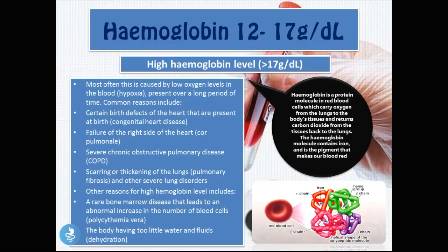A higher than normal hemoglobin level means greater than 17 grams per deciliter, most often caused by chronically low blood oxygen levels known as hypoxia. Other common causes include congenital heart disease, failure of the right side of the heart or cor pulmonale, severe chronic obstructive pulmonary disease, pulmonary fibrosis or other severe lung disorders, polycythemia vera, and dehydration.